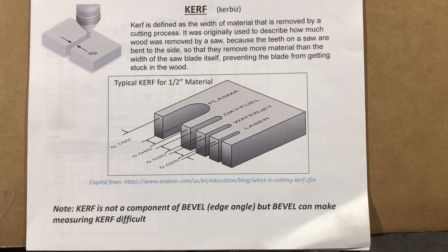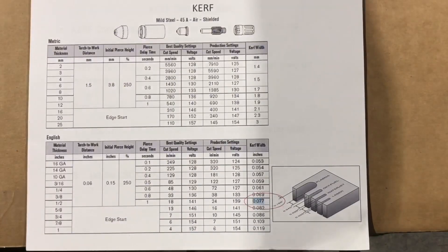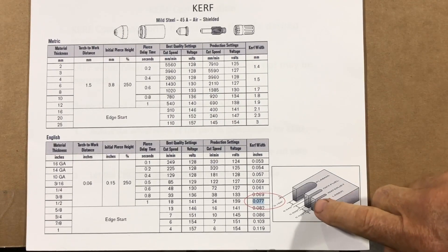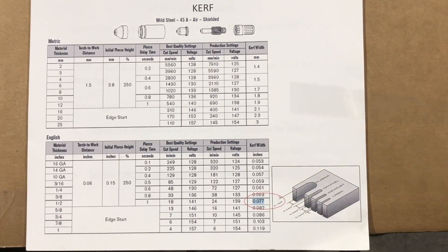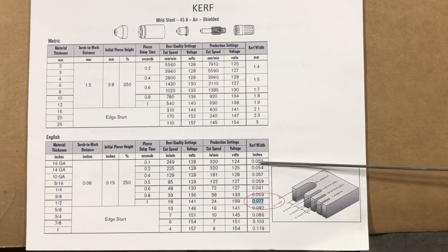This little drawing is for half-inch material, taken from the ESAB website. It shows notionally the difference between plasma, laser, water jet, and oxy fuel. Plasma looks like it's got the biggest kerf — they say for half-inch material it's typically 150 thousandths of an inch. If I look at my Hypertherm manual for my 45 XP, half-inch material says I should use a kerf of 77 thousandths — about half that value. Here are the cut charts for mild steel, where you can find your kerf values.